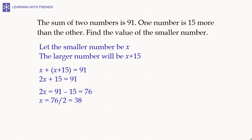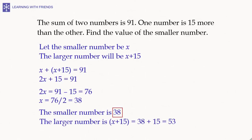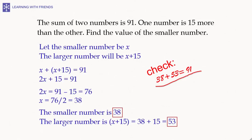On the left hand side we are left with x, and on the right hand side we get 76 divided by 2, which is 38. Since x was the smaller number, the smaller number is 38 and the larger number is x plus 15, which is 38 plus 15, or 53. We can quickly check: 38 plus 53 is indeed 91, and therefore our solution is correct.